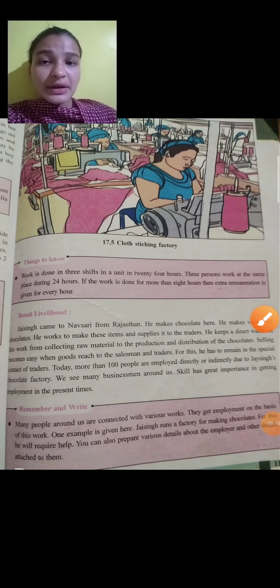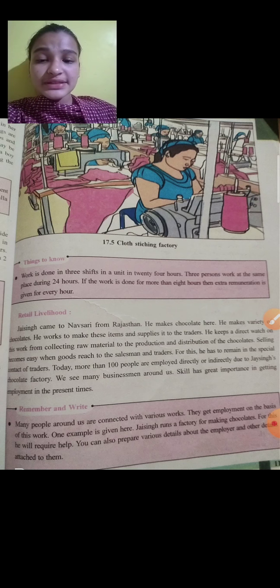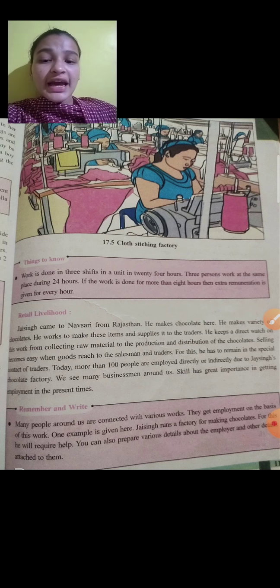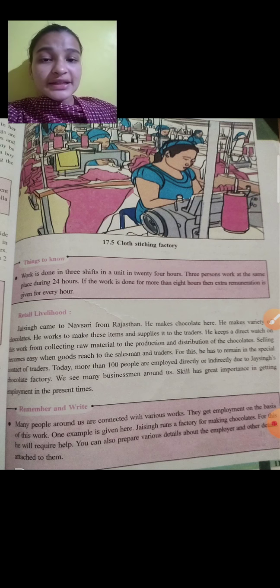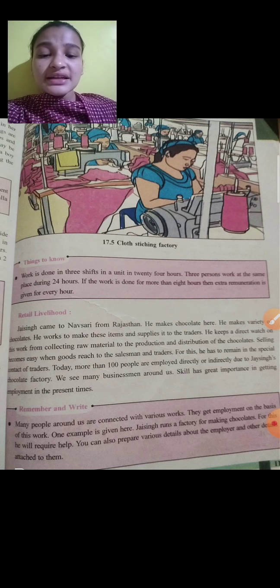Hello children, I wish you a very beautiful morning. Last time we completed up to retail livelihood. Jai Singh was from Rajasthan, he makes chocolate and was selling — by his skill he was capturing the traders. So directly or indirectly he was making people employed. That is what we saw in retail livelihood.